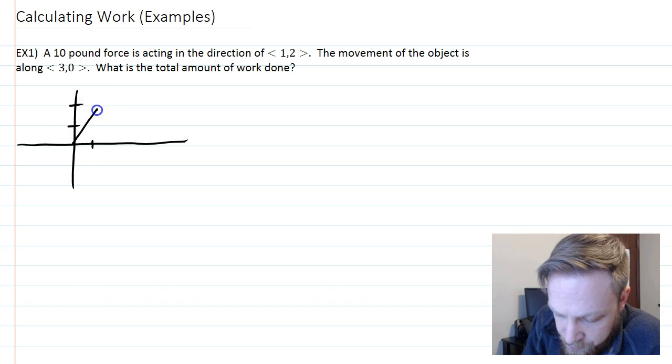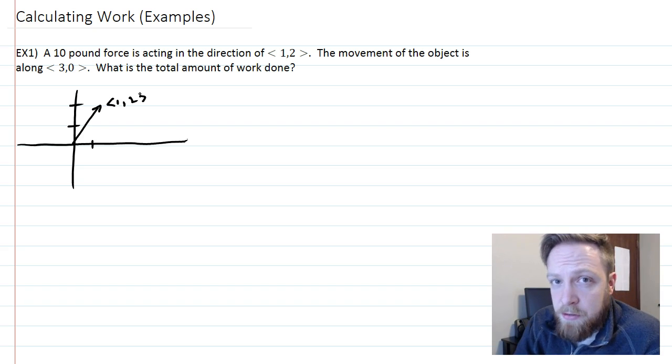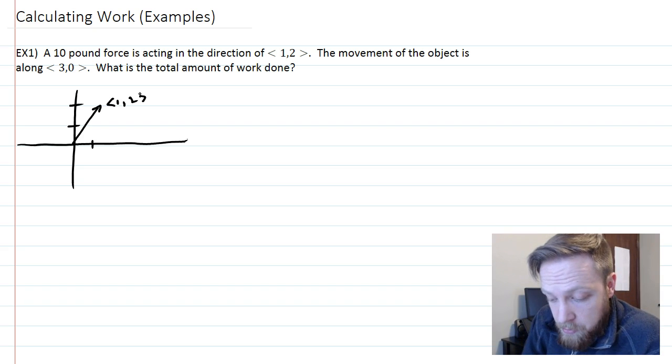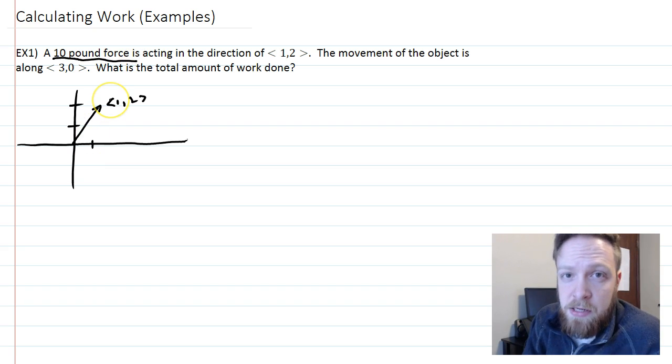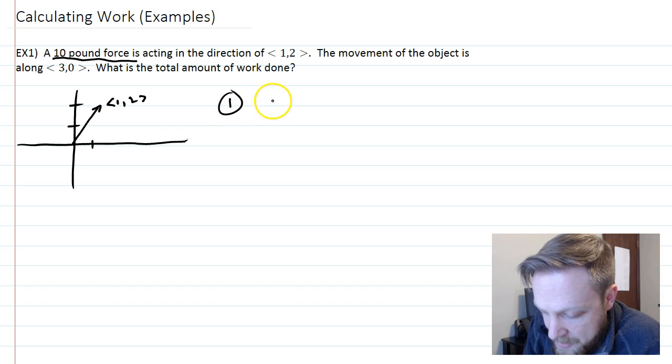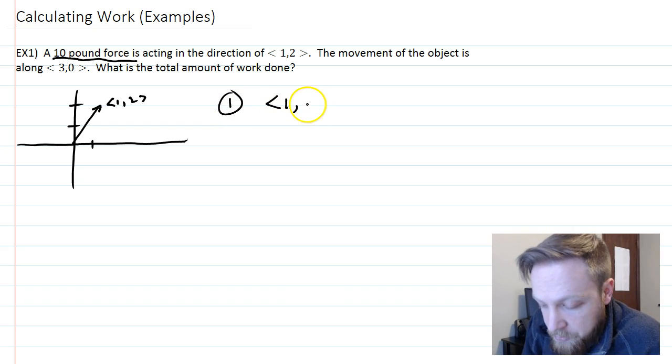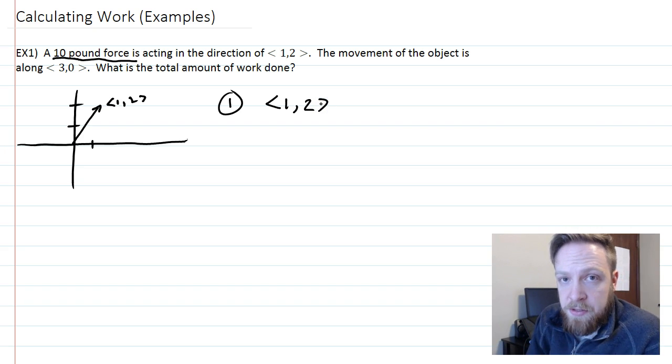One of the confusing things about this is the force is actually acting in this direction <1,2>. The problem is that the magnitude of that, if you figure it out, is the square root of 1² + 2², which is √5. So the issue here is if it's actually a 10 pound force, that vector is not long enough. So the first thing we're going to do is make the vector <1,2> and change that into a vector that's pointing the same direction but is actually 10 long.